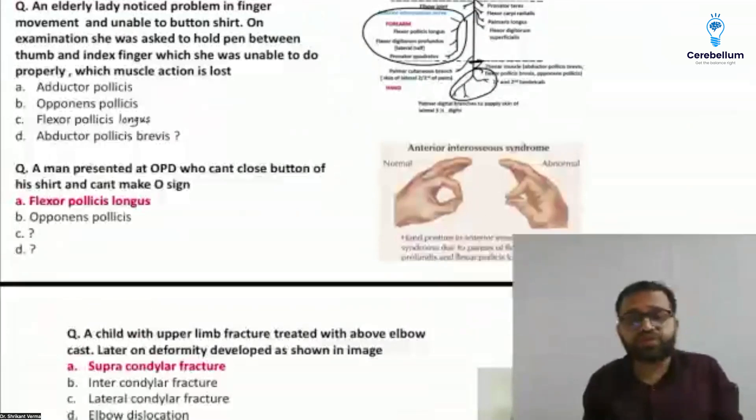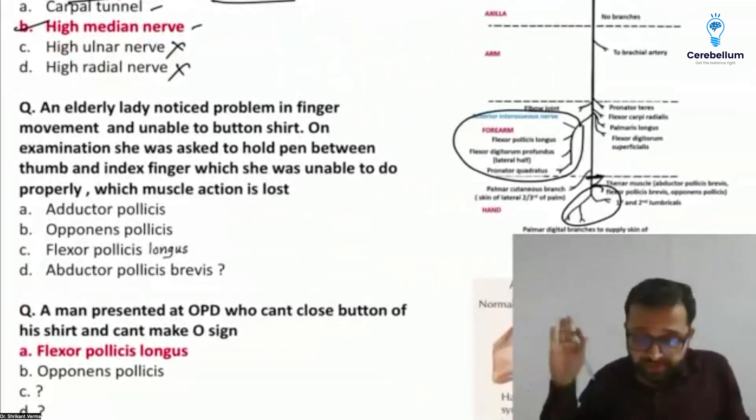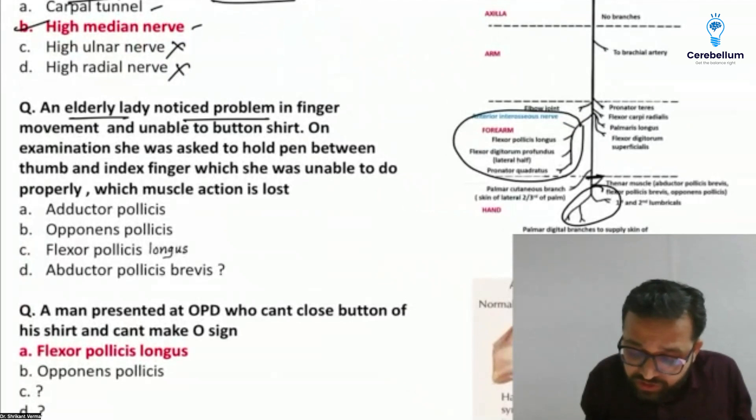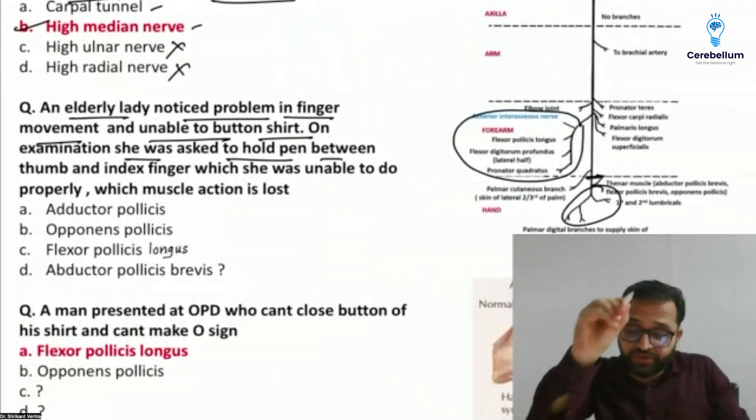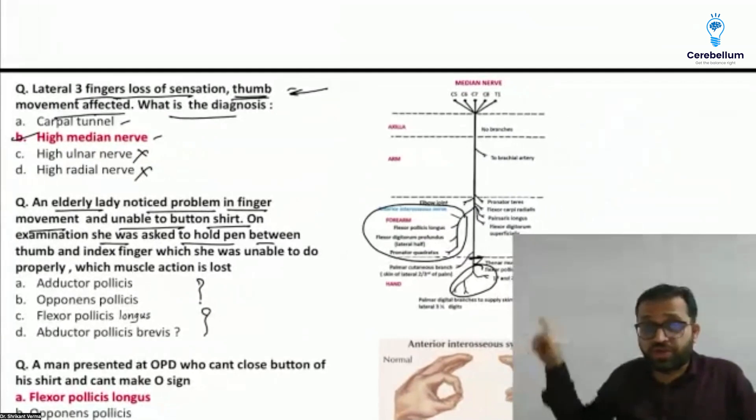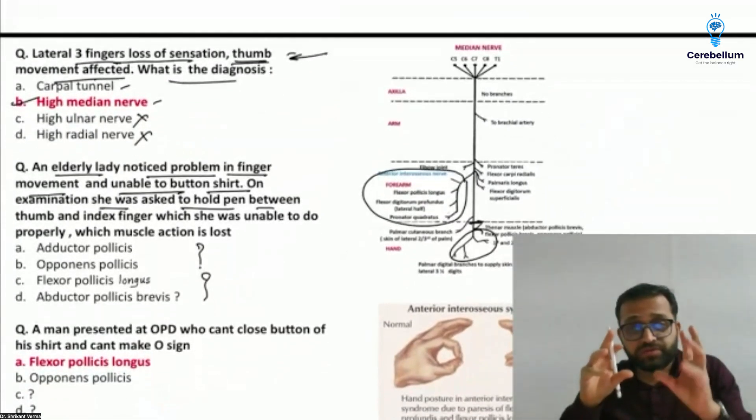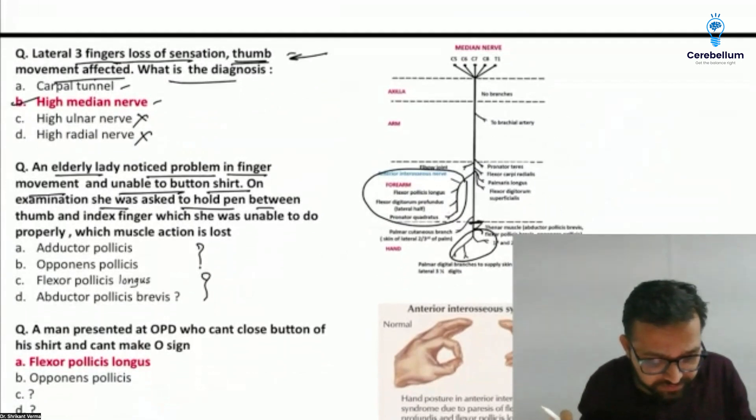There is one more question over the median nerve. These are confusing, please inform me about the question. An elderly lady noticed problem in finger movement and unable to button shirt. On examination she was asked to hold a pen between thumb and index finger which she was unable to do properly. Which muscle action is lost? Again I am having confusion in this. Students are very confused about these three questions all related with the hand. There was also a question about fissure in skull bone, most probably second fissure or foramen of skull bone.